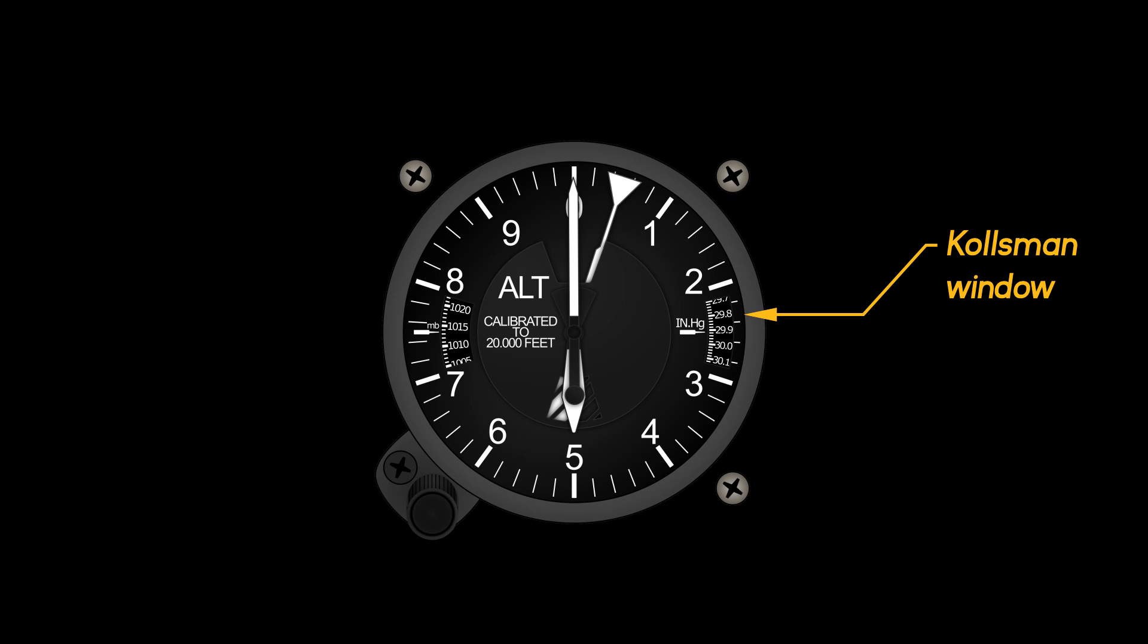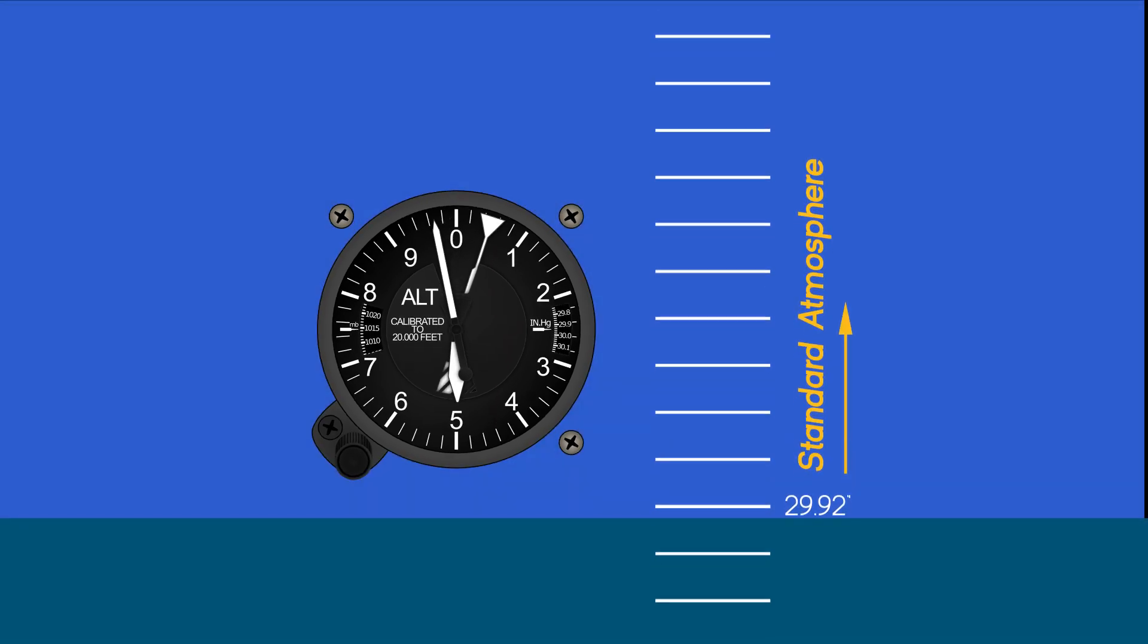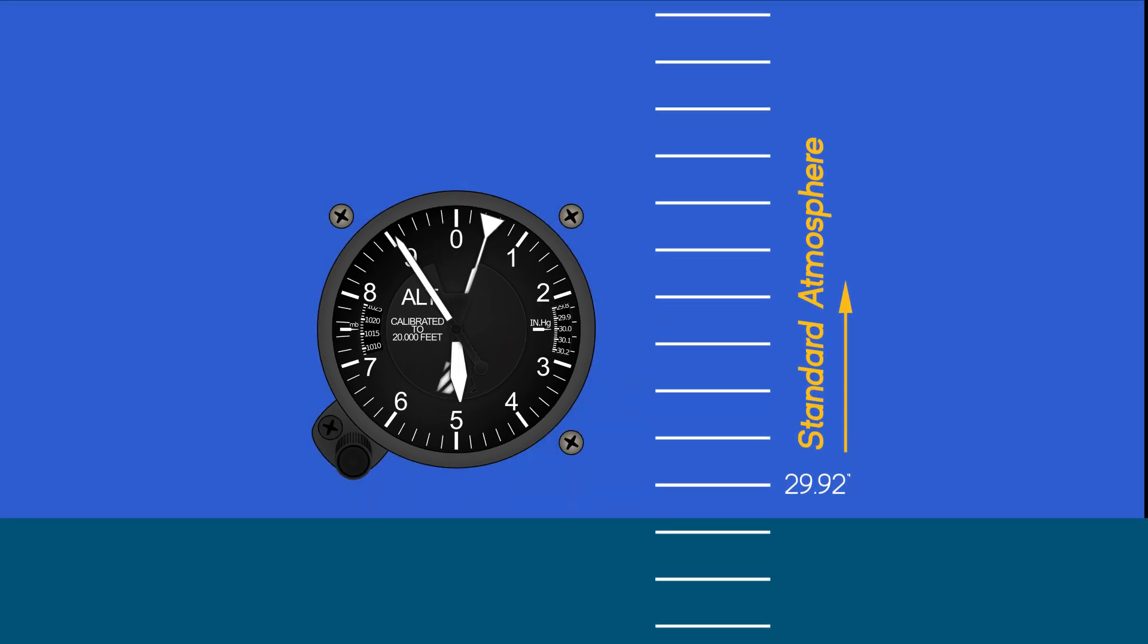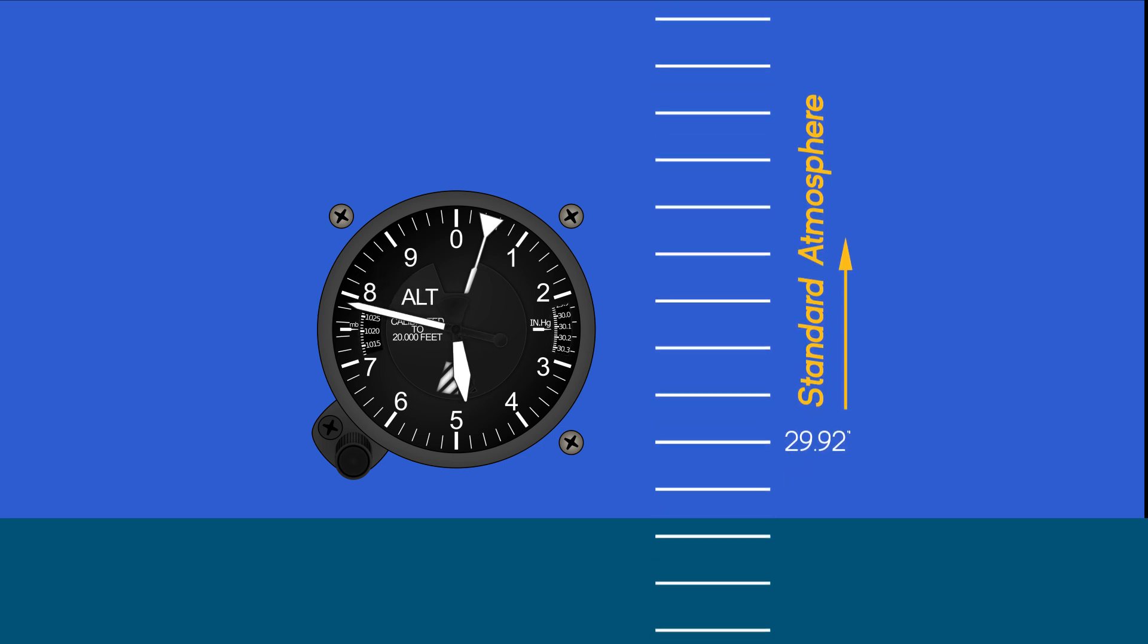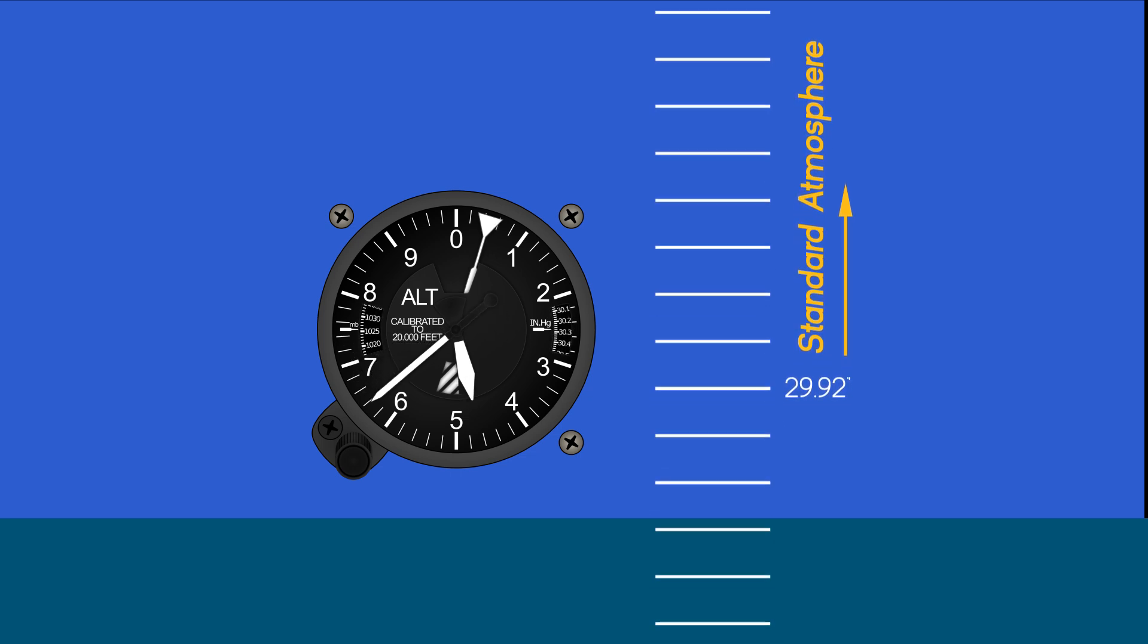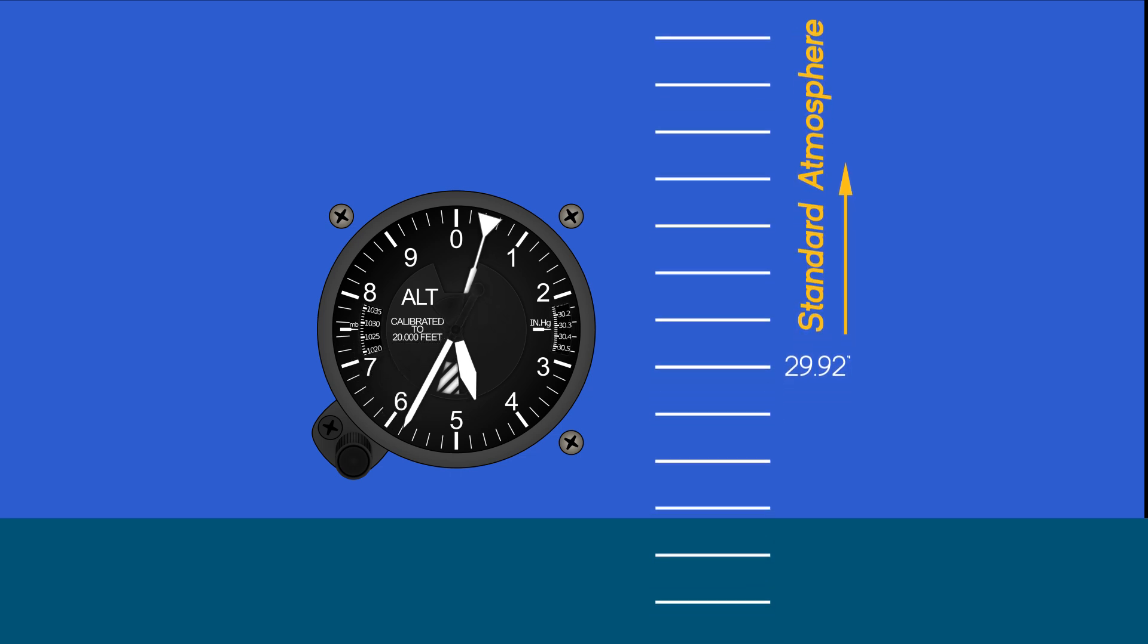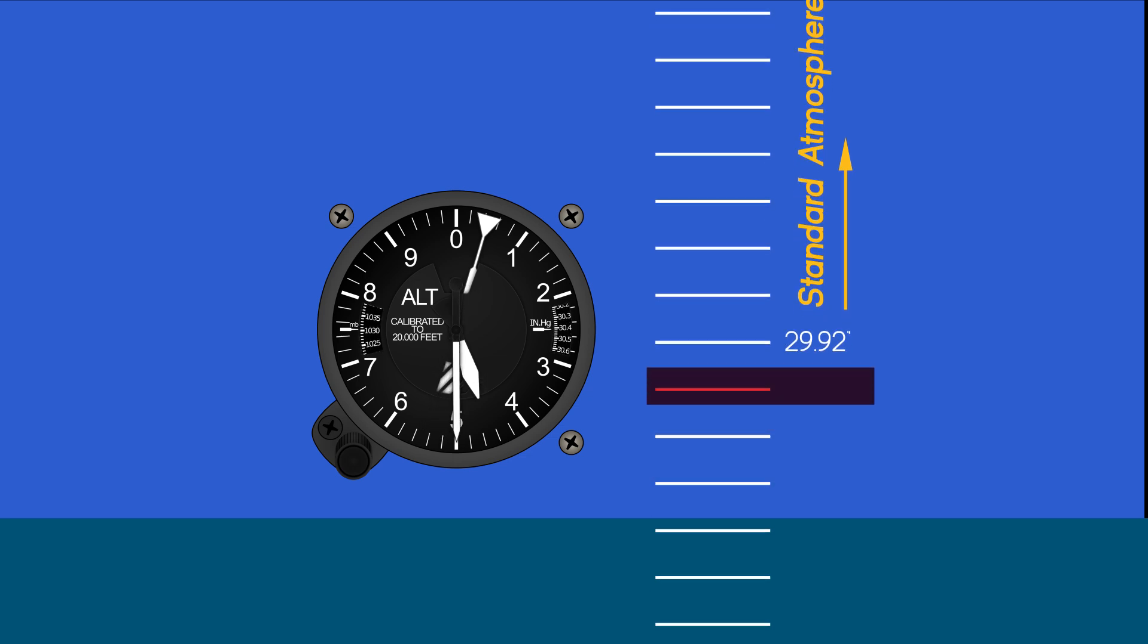What is happening when you enter the altimeter setting is we're actually shifting the entire standard atmosphere vertically. You can think of this as a simple linear offset. This means that 29.92 inches of mercury is no longer the pressure at sea level, but has been translated up or down. Note that this has no effect on the lapse rate of the instrument. It simply shifts the pressure level that we start lapsing from.